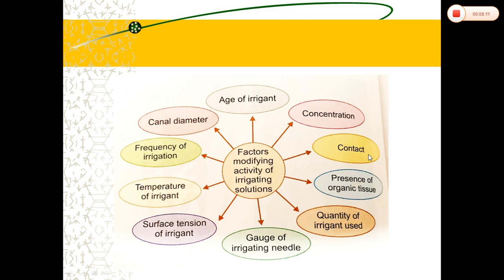Regarding canal diameter: the wider the canal, the better the debridement action of the irrigant. Regarding age of the irrigant: if it has a good shelf life, it is useful, but freshly prepared solutions are always more efficient than older ones.